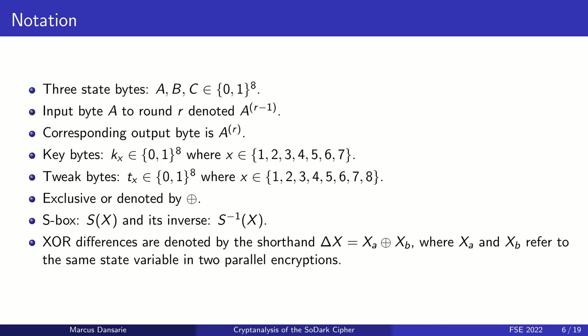This slide describes the notation used in the definition of the round function and the subsequent cryptanalysis. SODARC uses three state bytes — a, b, and z — and the inputs and outputs of the different rounds are denoted by superscript numbers in parentheses. The seven key bytes are denoted by a lowercase k with the byte number as subscript. The same goes for the eight tweak bytes, denoted by lowercase t. Bitwise XOR is denoted by a circled plus sign. For applications of the S-box, the functional notation shown here is used. The cryptanalysis uses differences between two parallel encryptions in many cases, and the delta character is used as a shorthand for this.